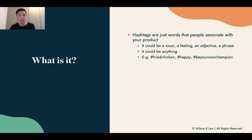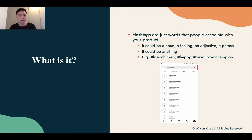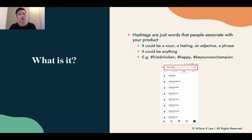For example, if I had a picture of fried chicken, I can put in fried chicken. I can put in that it gives me a feeling of being happy, so I put in happy, or be your own champion. These are all hashtags that people use to put on their posts as relevant associations with that post.